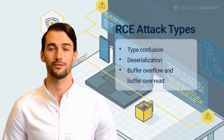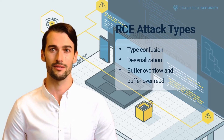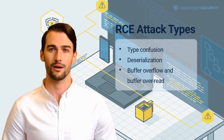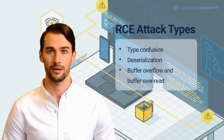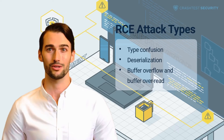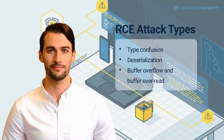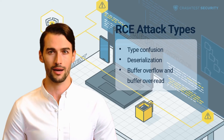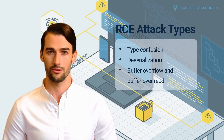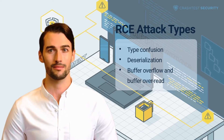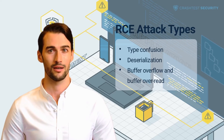Deserialization: to transfer pieces of data over a network, it is serialized, i.e. converted into binary. Then it is deserialized and converted back into an object to be used at its destination. By formatting user input in a particular way, attackers can create an object turned into executable dynamic code once it is deserialized.